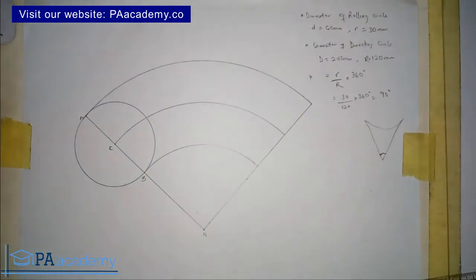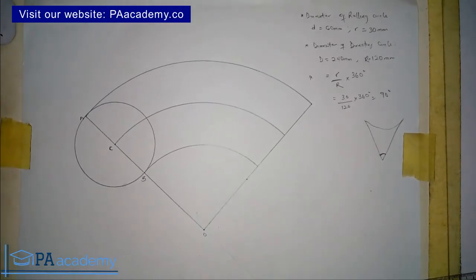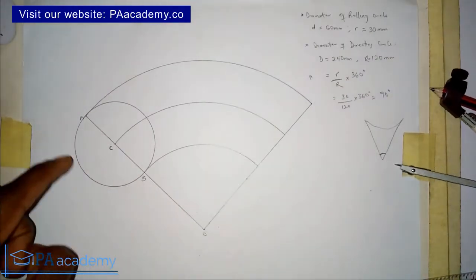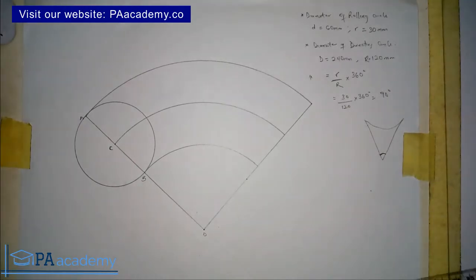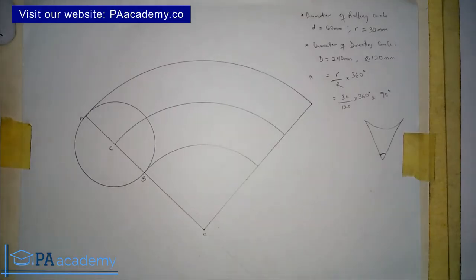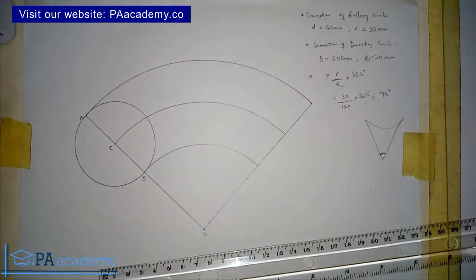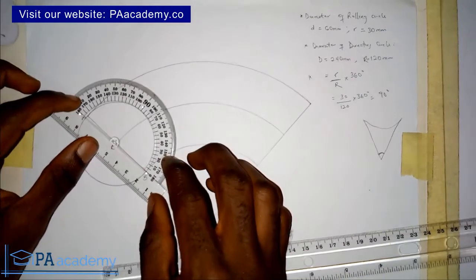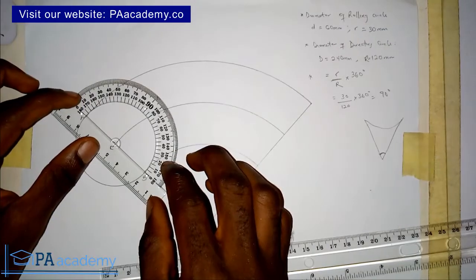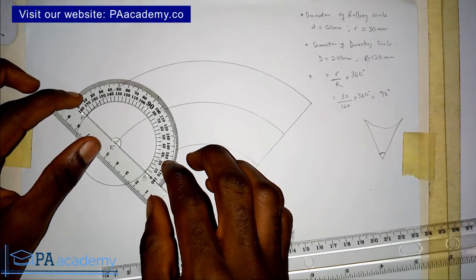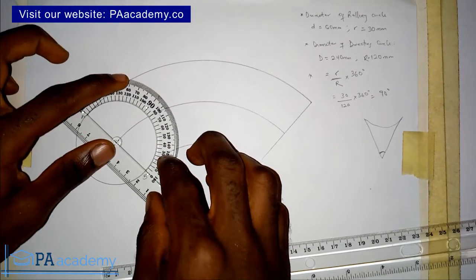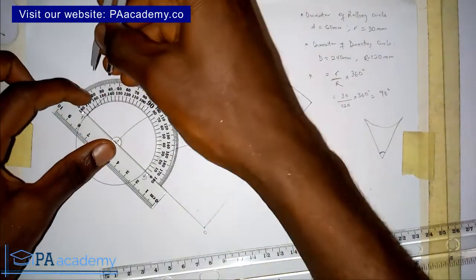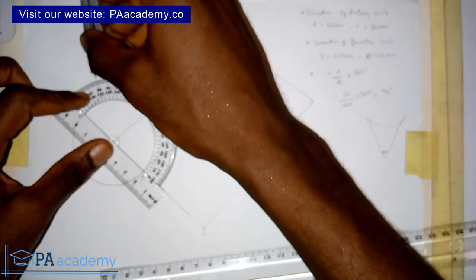At this point you'll have the rolling circle drawn. The next thing is to divide this circle into 12 equal parts. You can use your protractor or your compass — whatever method you prefer — just make sure it is divided into 12 equal parts. This will be at 30-degree intervals.